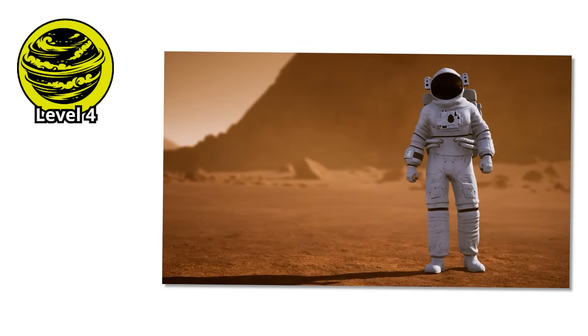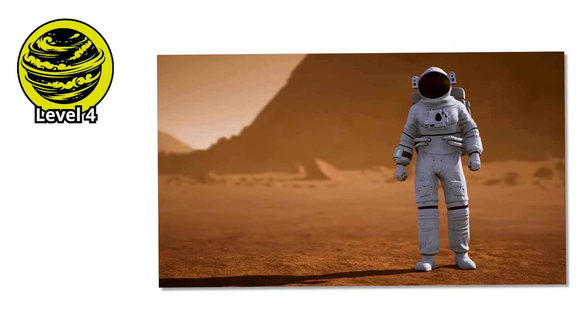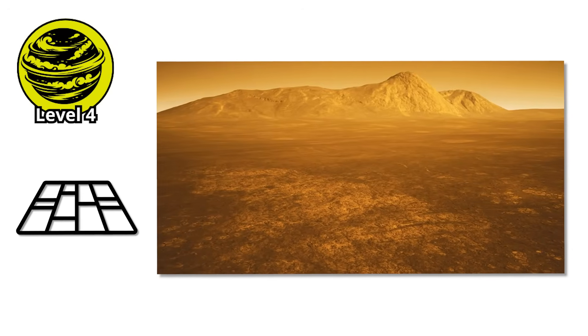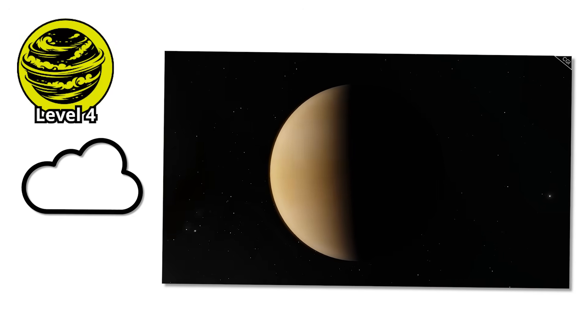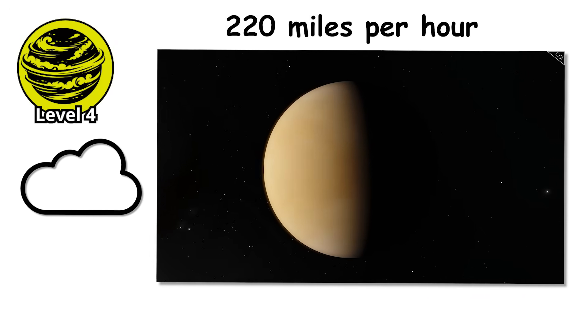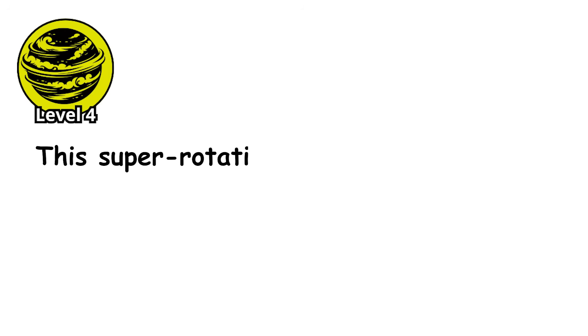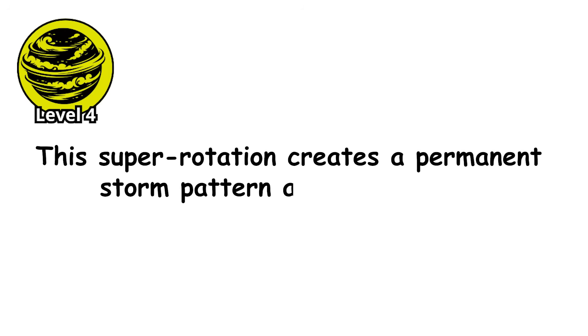Picture this: You're standing on Venus in a very good space suit. The ground beneath you is barely moving. One Venusian day lasts longer than a Venusian year. But overhead, the clouds are racing around the planet at 220 miles per hour.